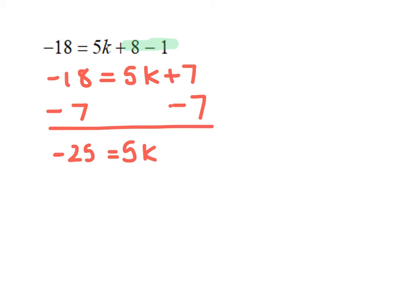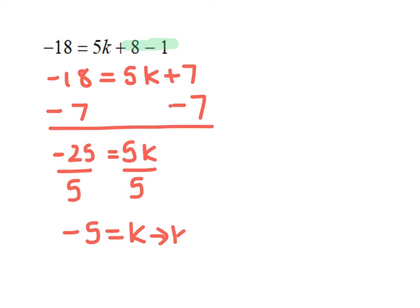The last thing we have to do is get k by itself — we need to get rid of the 5. The inverse operation for multiplication is division, so we divide both sides by 5. That gives us negative 5 equals k, or rewritten: k equals negative 5.